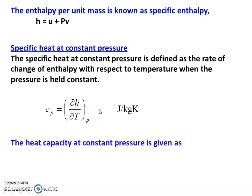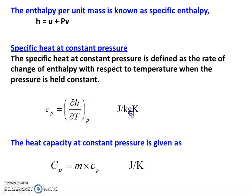Specific heat at constant pressure is defined as the rate of change of enthalpy with respect to temperature when the pressure is held constant. So Cp equal to dou h by dou T at constant pressure. The unit is joules per kilogram Kelvin. Heat capacity at constant pressure: capital Cp equal to m into small cp, in joules per Kelvin.